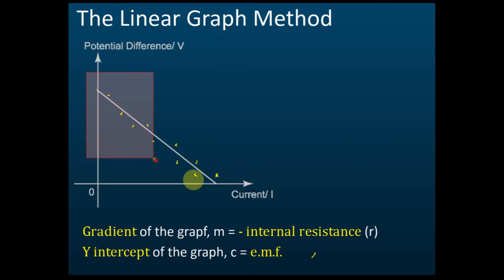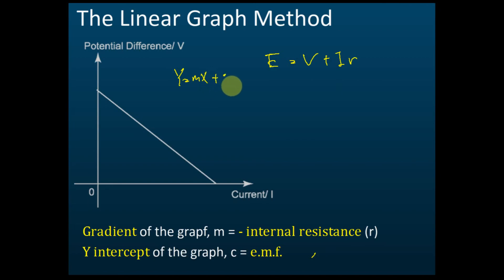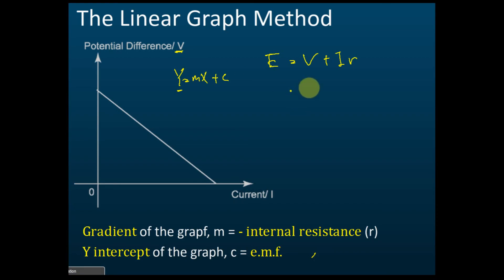After getting this straight line graph, we form a linear equation for it. We know that E = V + IR, and the equation for a straight line is y = mx + c. The vertical axis is V, so we want to make V the y-axis.